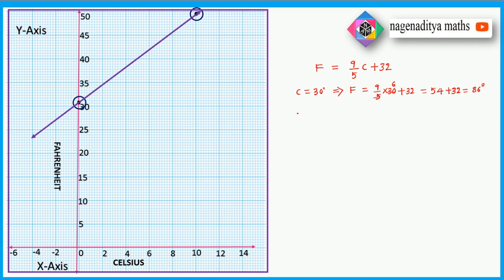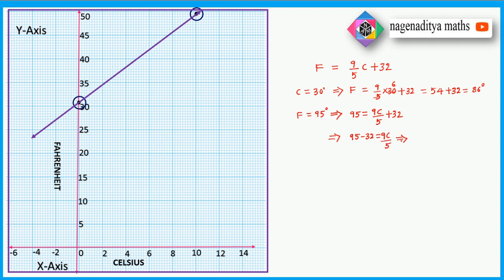Next, for F = 95 degrees: substituting into 95 = 9C/5 + 32. This implies 95 minus 32 equals 9C by 5, so 63 = 9C/5. Therefore C = 63 × 5 / 9 = 35 degrees Celsius.